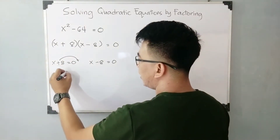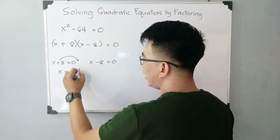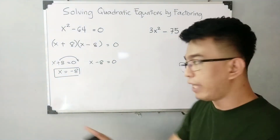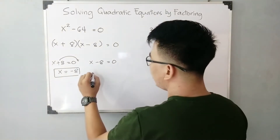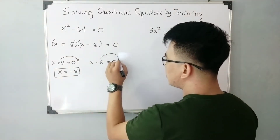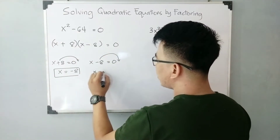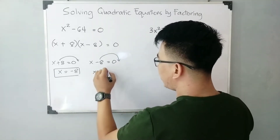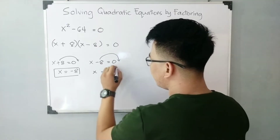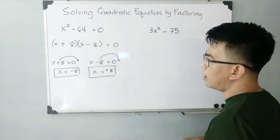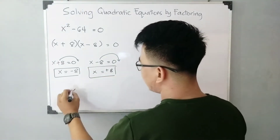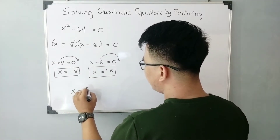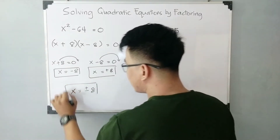By solving these equations, we transpose 8 to the other side. From positive it becomes negative, so x is equal to negative 8 — this is the first value of x. For the second equation, transposing gives x is equal to 8. So the final answer is x is equal to plus or minus 8; these are our possible answers.